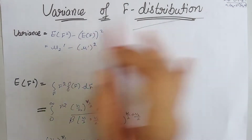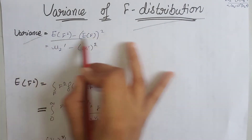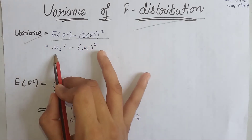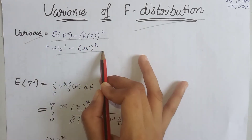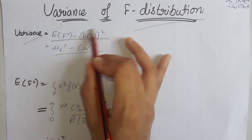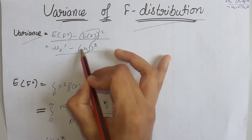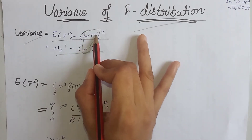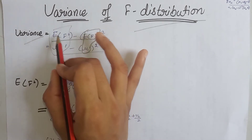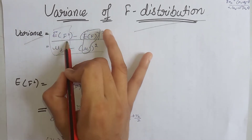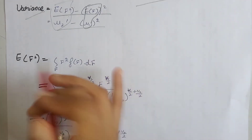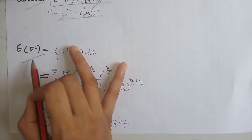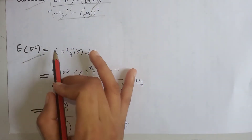We know that variance in terms of expectation equals E(F²) minus [E(F)]², and in terms of moments about origin it is μ₂ dash minus (μ₁ dash)². We have already calculated the mean. We now need to calculate E(F²), that is the expectation of F squared.